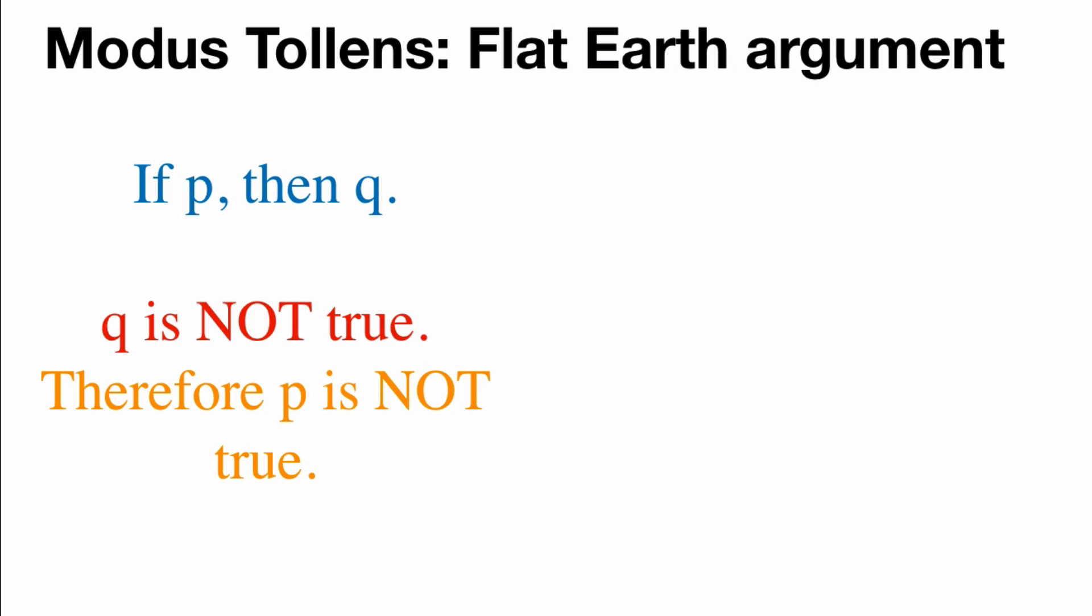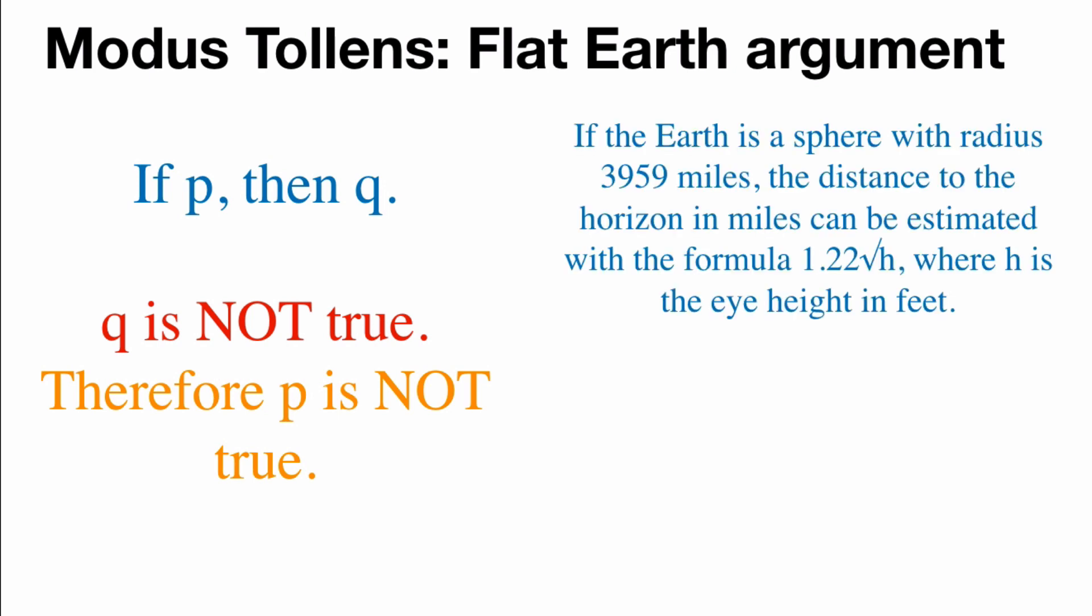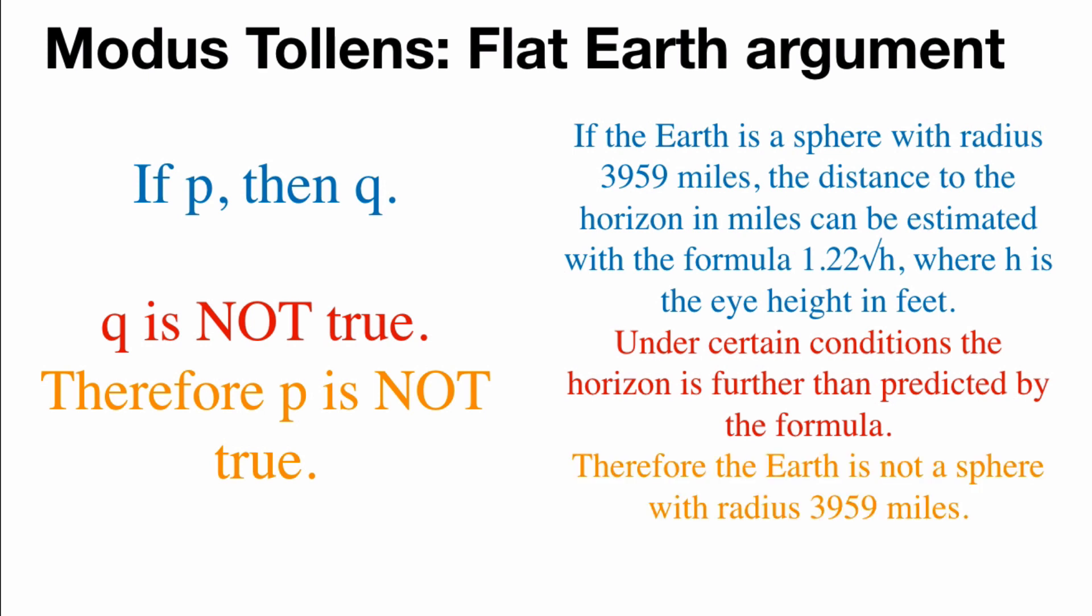Now what's the flat earth argument? The hypothesis is that if the earth is a sphere with radius 3,959 miles, the distance to the horizon in miles can be estimated with the formula 1.22 times the square root of h, where h is the eye height in feet. But under certain conditions, the horizon is further than predicted by the formula. Therefore, the earth is not a sphere with radius 3,959 miles. Again, very logically consistent.